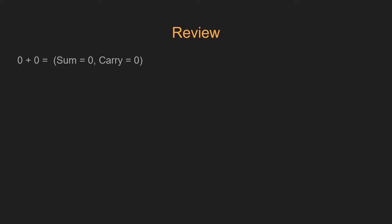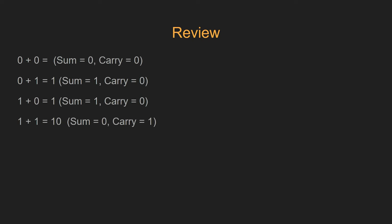Let's have a quick review. If we add 0 and 0 together, that's going to be a sum of 0 and a carry of 0. If we add 0 and 1 together, we get a sum of 1 but we don't carry anything over. If we add 1 and 0 together, again, sum of 1, carry of 0. If we add 1 and 1 together, that makes 2, or 1, 0 in binary, which means the sum is 0 but we carry over 1. And if we have 1 and 1 and 1 together, that makes 3, or 1, 1 in binary, which means we keep the sum as 1 and we carry 1 as well.